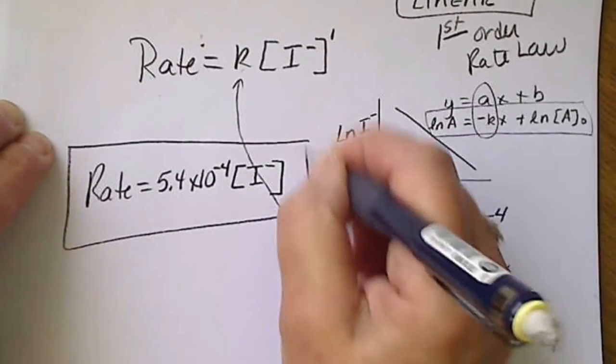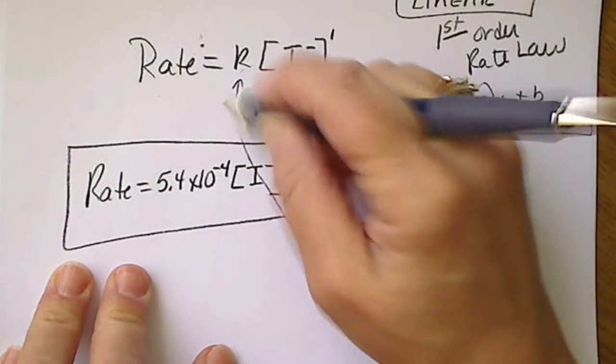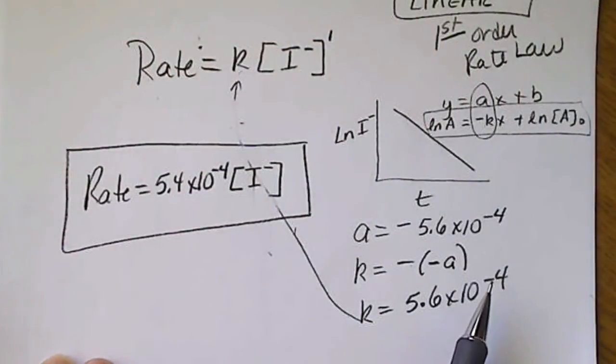So we can obtain everything we need for the rate law from the calculator. That gives us the line of best fit.